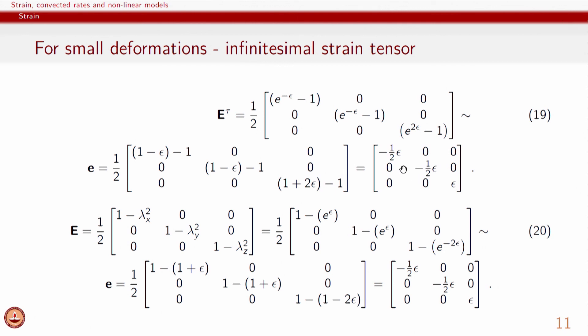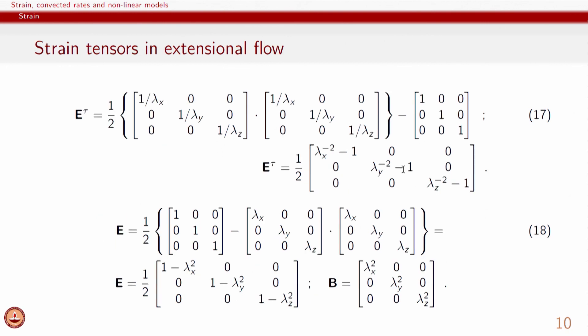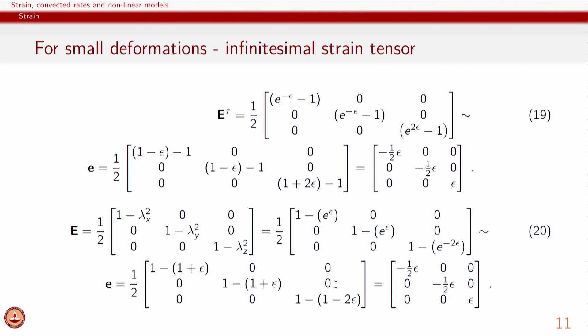For overall material deformation which is arbitrarily large in terms of stretch ratios, the strain tensors E-tau and E are given by the expressions we have derived. With this, we have finished defining the overall strains. In the next segment of the lecture, we will look at the convected rates and then finish up by looking at some non-linear models which are very useful for describing the non-linear response of materials.